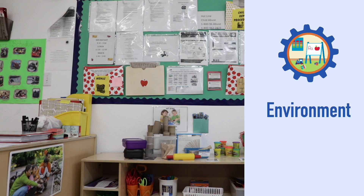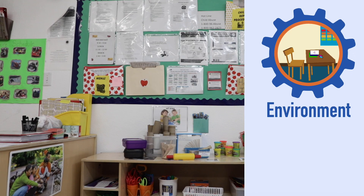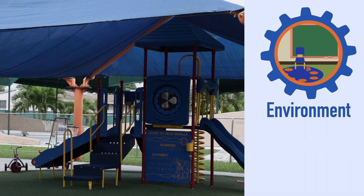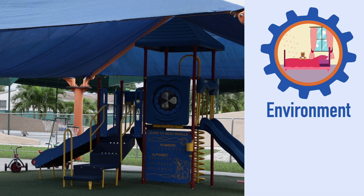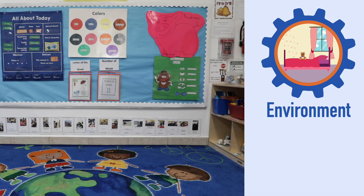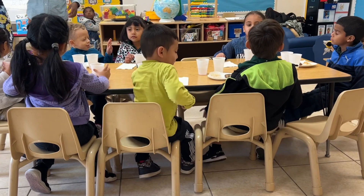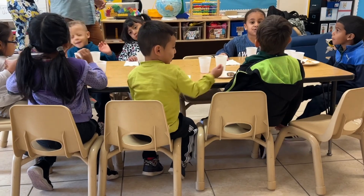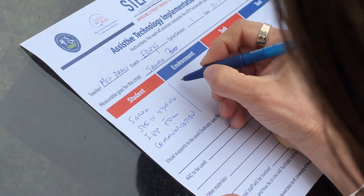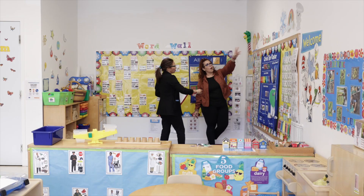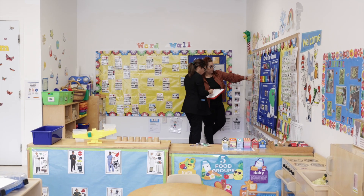The Environments. What are the child's educational routines? What are the instructional and physical arrangements at school that could prevent the child from being successful at a given task?